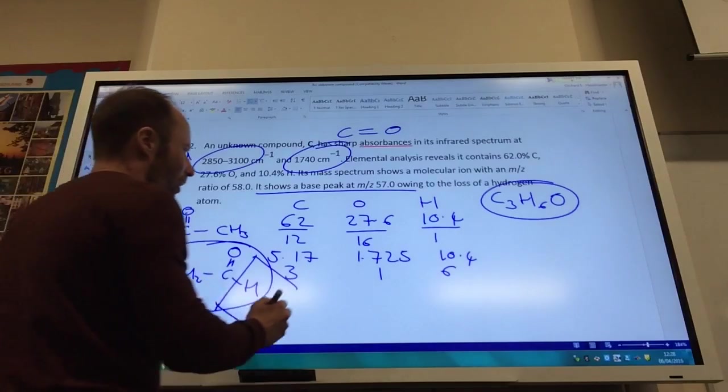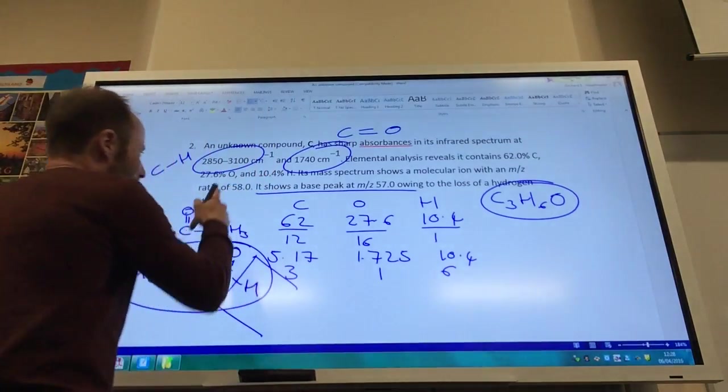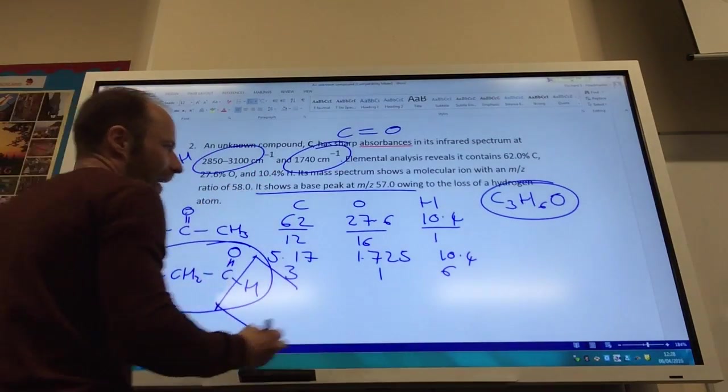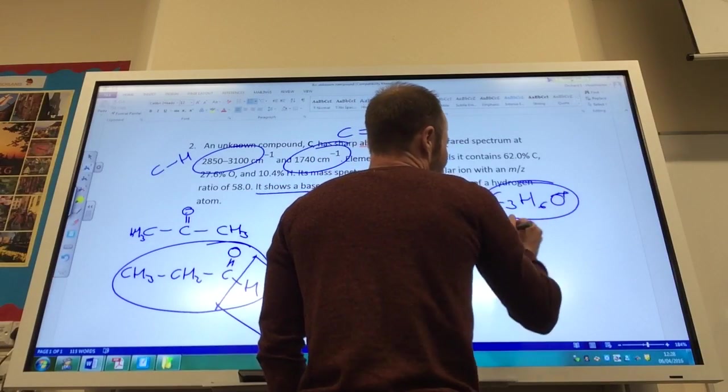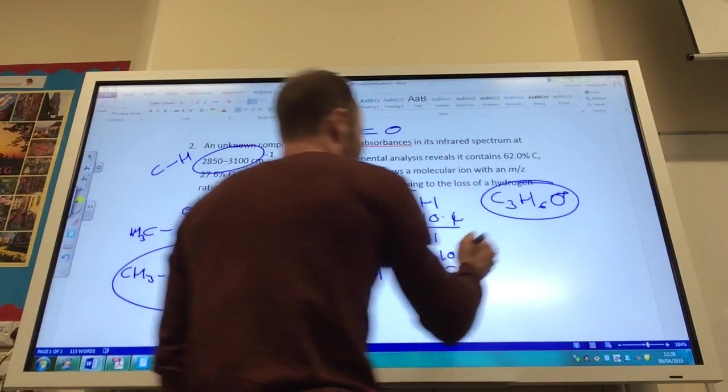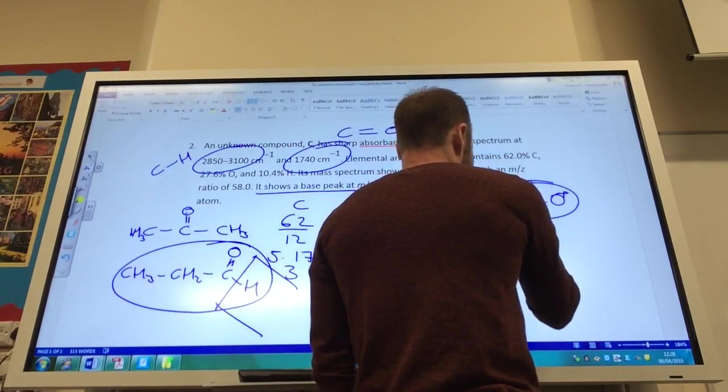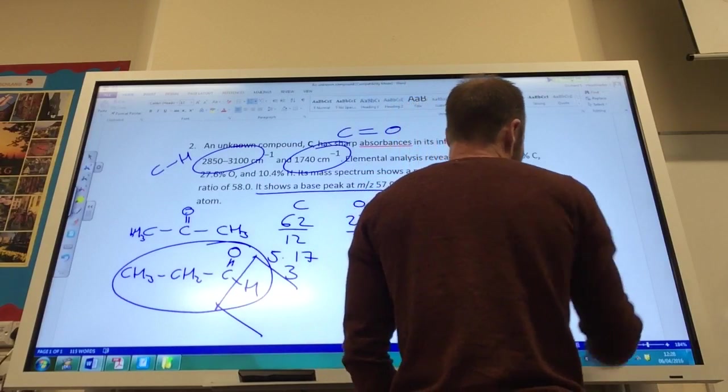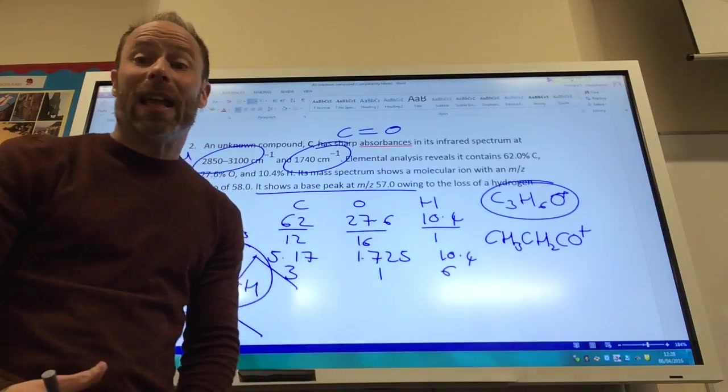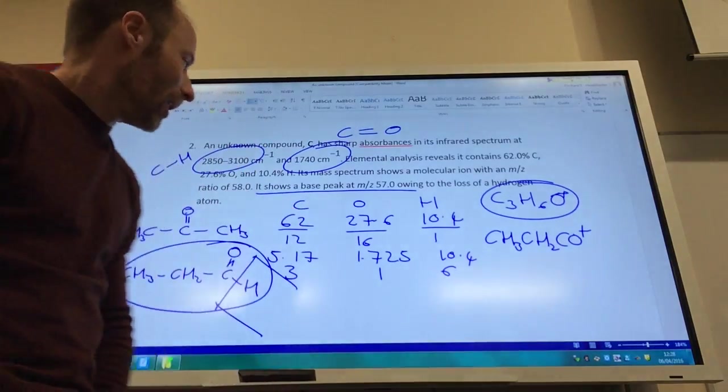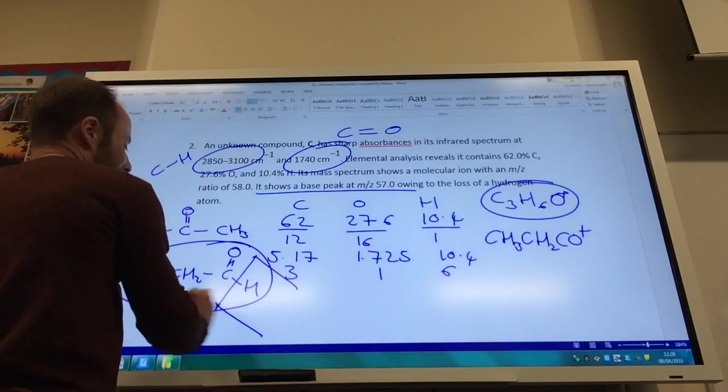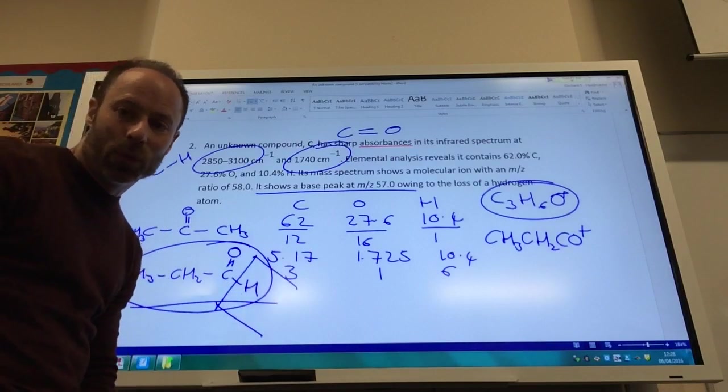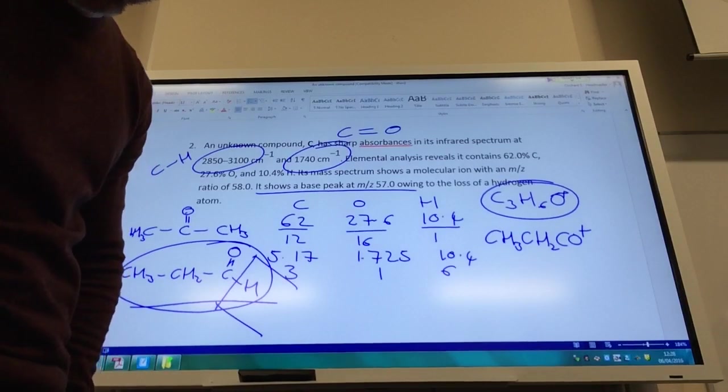So I've got my m/z of 58, which is my molecular ion there, and then I've also got CH3CH2CO+, which is your peak at 57. And therefore I can decide which isomer it is, and it is propanal, which is the one that we need today.